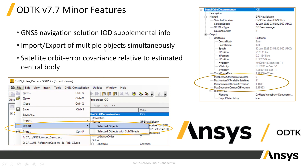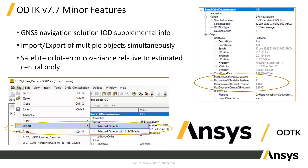We also added the ability to import and export multiple objects simultaneously — simply multi-select. And finally, a niche feature: satellite orbit error covariance relative to an estimated central body. This is specific to people looking to estimate both a satellite and an asteroid. You might have your satellite represented in sun-centered coordinates on its way to the asteroid while taking OPNAV measurements of the asteroid, building a correlation between the satellite state and an estimated correction to the asteroid state. This allows you to pull out the satellite ephemeris relative to the asteroid, including the effects of those correlations.